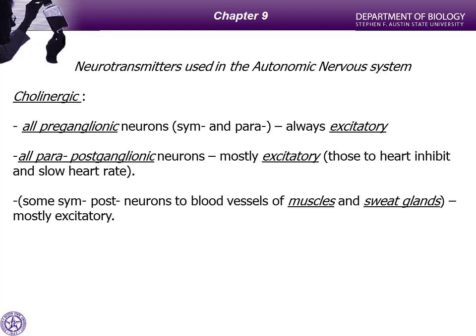That makes sense. If the preganglionic neuron is sending a signal, then you have to excite the postganglionic neuron or else the signal is going to stop. So the synapse between pre and postganglionic neurons is always excitatory and it always uses acetylcholine.